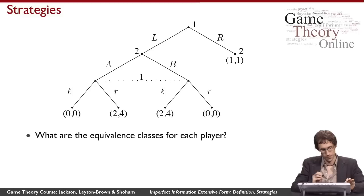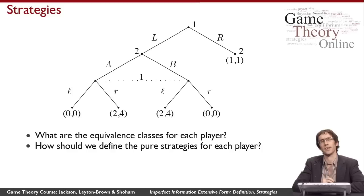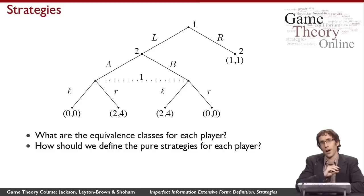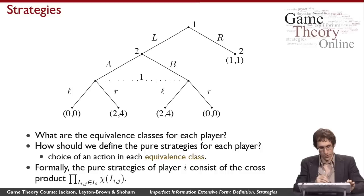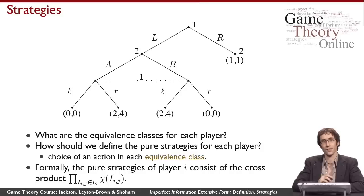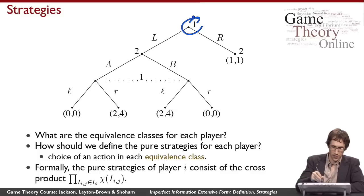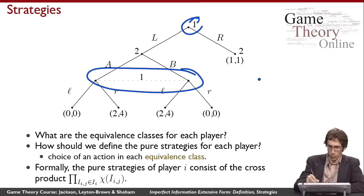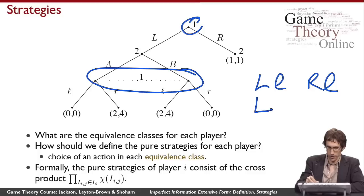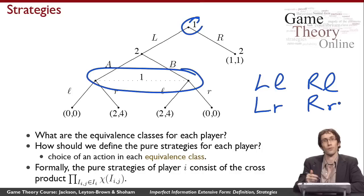How should we define pure strategies in this game? We use the cross product of the action sets across each equivalence class — not across every choice node individually, since that would allow a player to act differently within the same equivalence class. So player one's pure strategies are a choice at his first equivalence class paired independently with a choice at his second: LL, RL, LR, or RR — four strategies rather than eight.